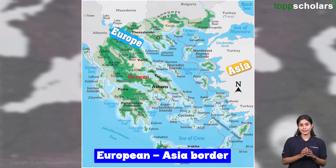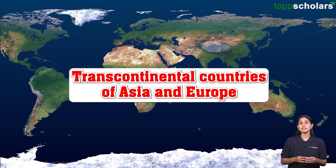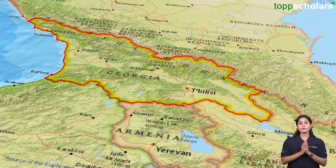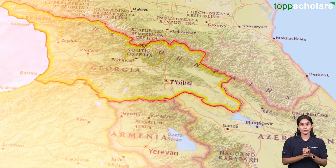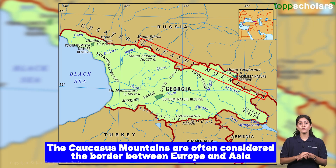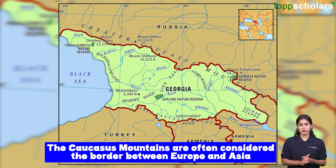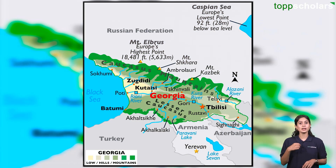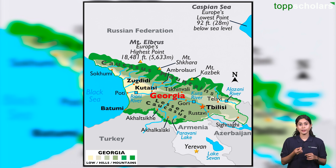Lastly, let us look at countries that are possibly transcontinental between Asia and Europe. The first one is Georgia. The Caucasus Mountains are often considered the border between Europe and Asia, suggesting that Georgia is located south of these mountains, placing it in Asia. However, a small part of northwestern Georgia lies north of the mountains, suggesting a small European foothold, even though some simplify this by putting all of Georgia in Asia.